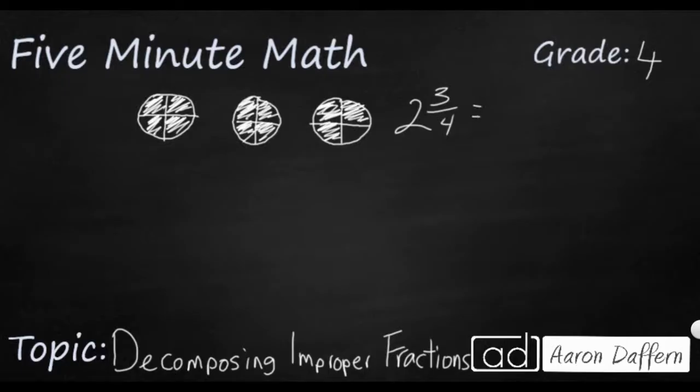So we have 2 and 3 quarters, we have 11 quarters, or 11 fourths. Now, how can I break this up into a sum of smaller fractions?